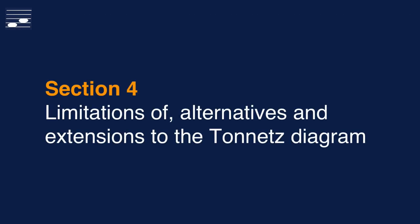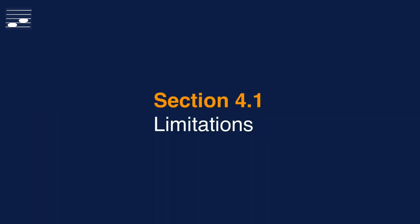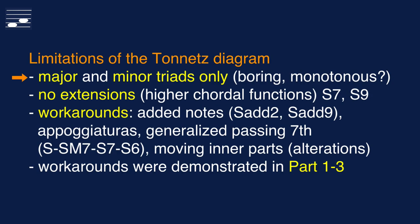Using the Tonnetz diagram within the Neo-Riemannian theory framework has consequences that I want to discuss here. In addition to the textbooks mentioned at the start of this tutorial, here you'll find references that present alternatives and extensions to the Tonnetz. The triangular Tonnetz limits the chord structures to major and minor triads only. I find that this brings along the danger of monotony.